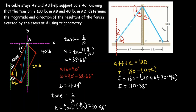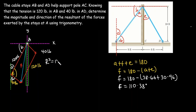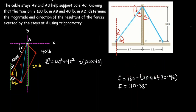Since we know the angle opposite to the resultant force and the two side lengths, we can use the cosine rule. R² = 120² + 40² − 2(120)(40) × cos(110.38°).